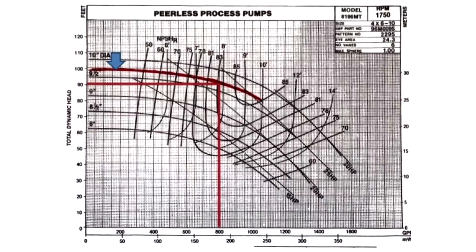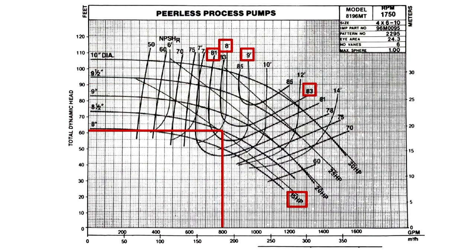Once an impeller diameter is selected, the pump will operate anywhere on that curve that the system allows. The curve also shows at any given point of flow and head the NPSH required by the pump and the horsepower for pumping a liquid with a specific gravity of 1.0, basically water at normal temperature.